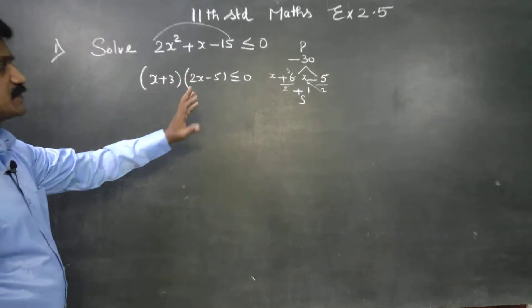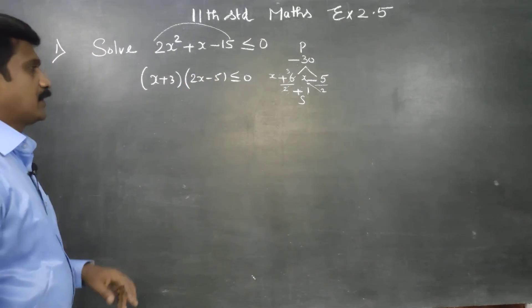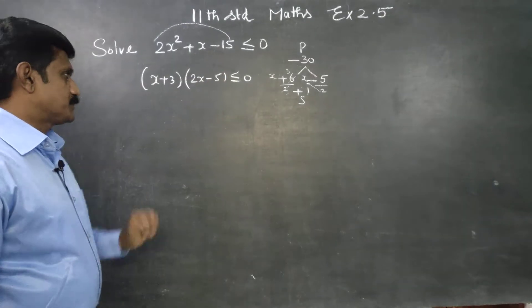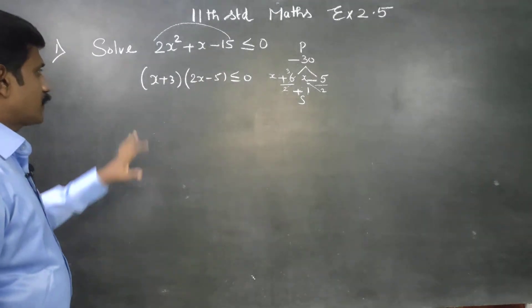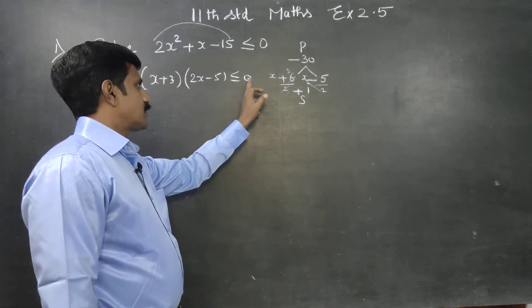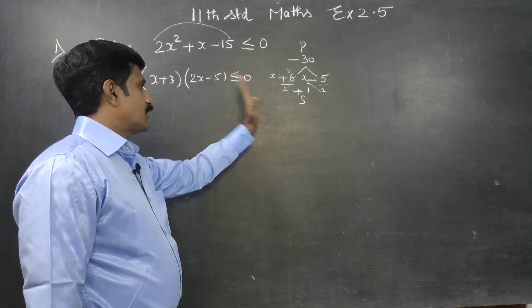Factorization gives us (x + 3)(2x − 5) less than or equal to 0. Using the product-sum method and factorizing, the values must be less than or equal to 0.